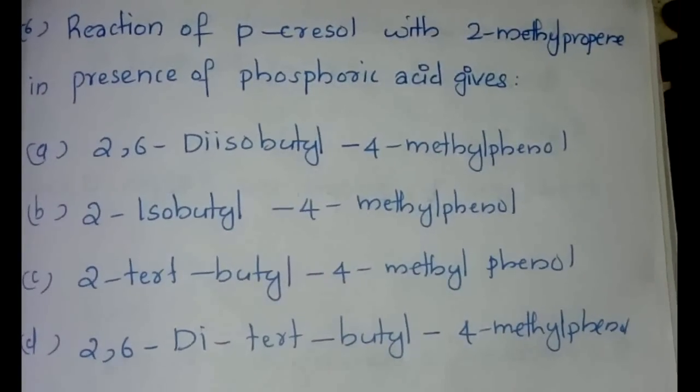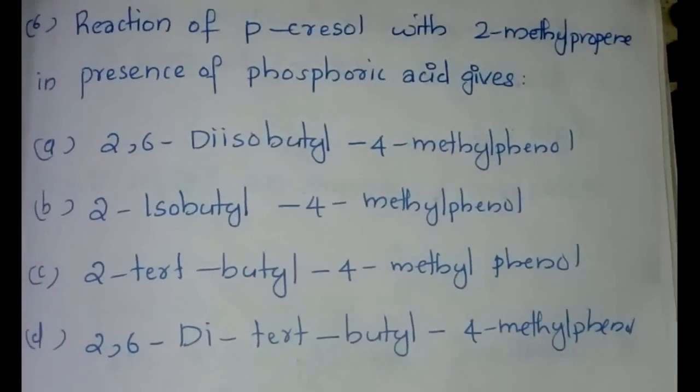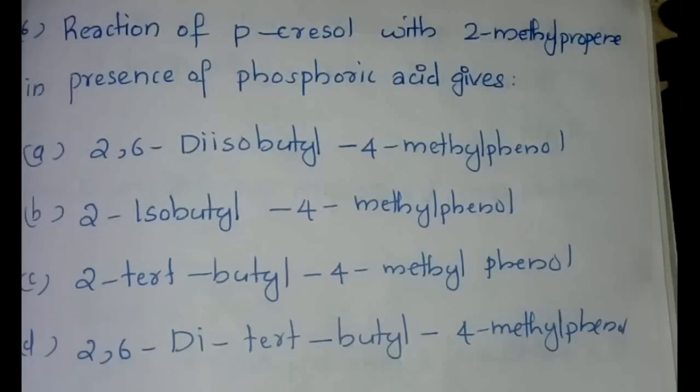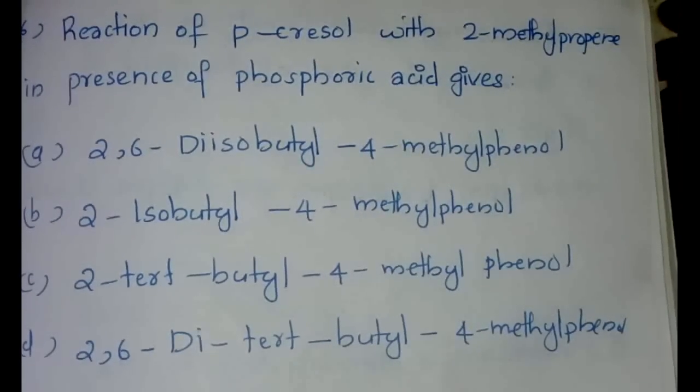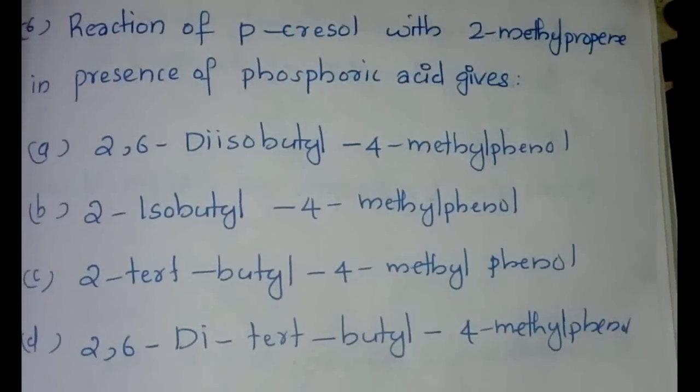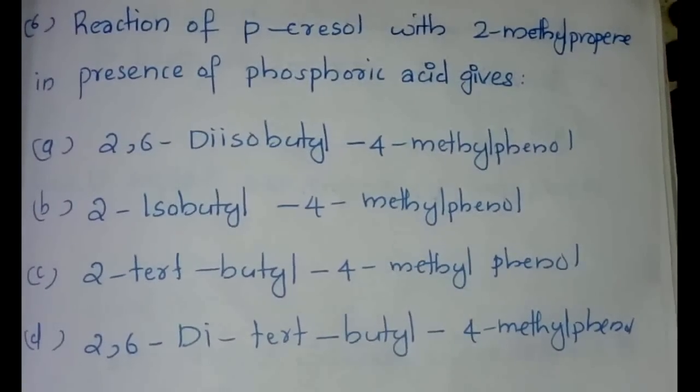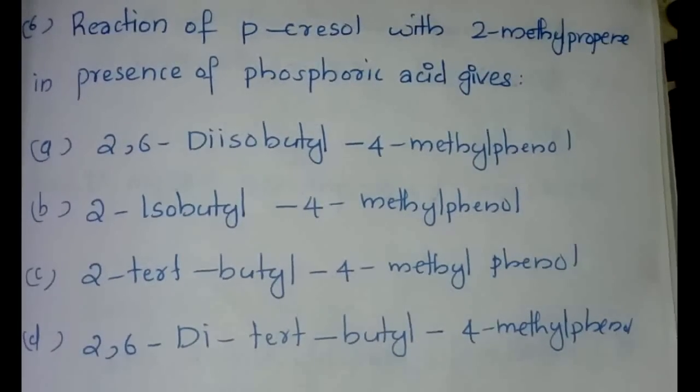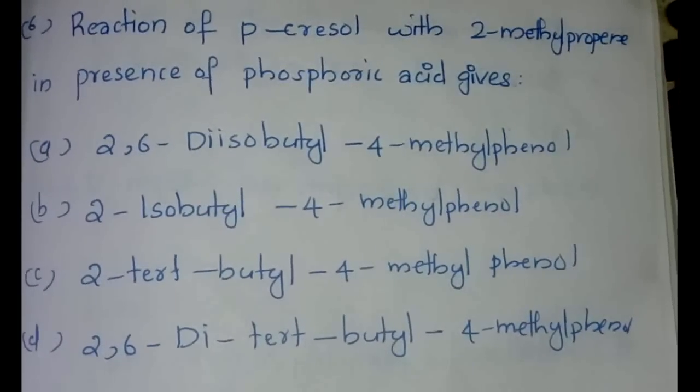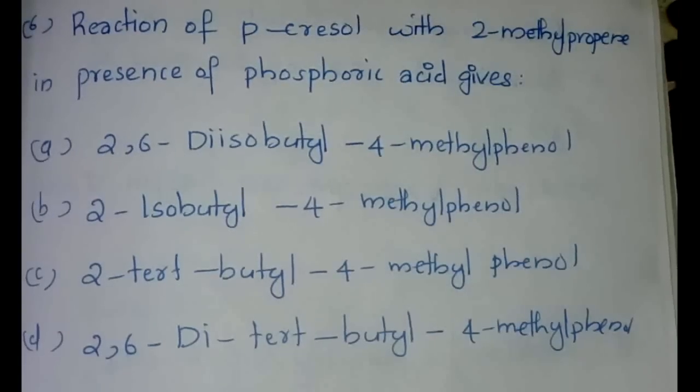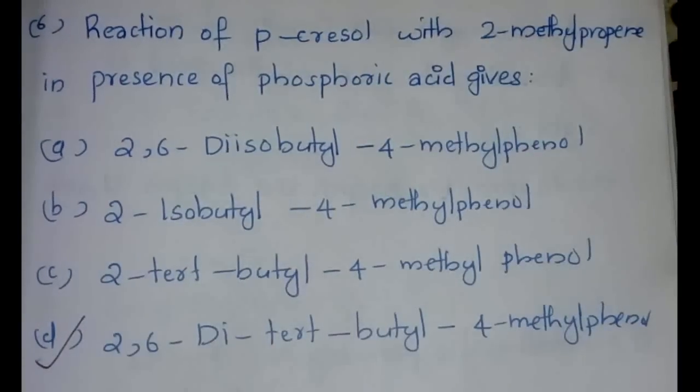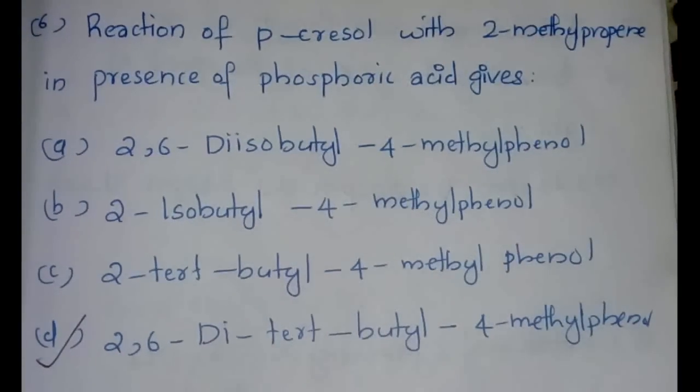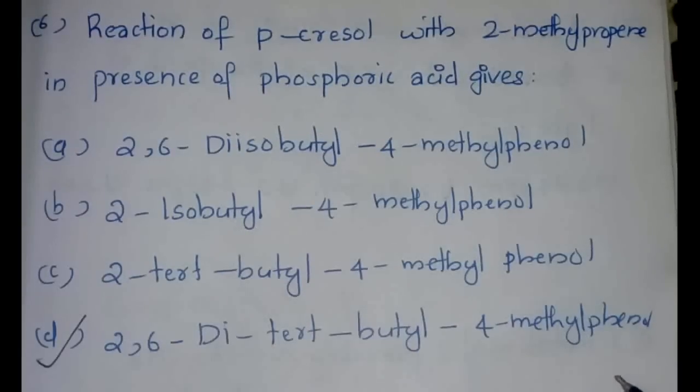This question is actually something that is purely application level. I don't know why they asked this question but I think it is because the product that is formed in this particular reaction is something of industrial importance. The question is reaction of p-cresol with 2-methylpropene in presence of phosphoric acid gives 2,6-di-tert-butyl-4-methylphenol.